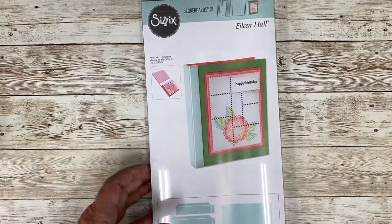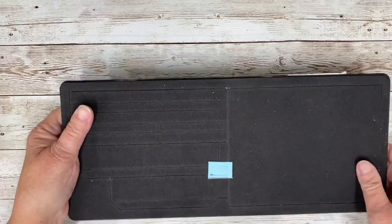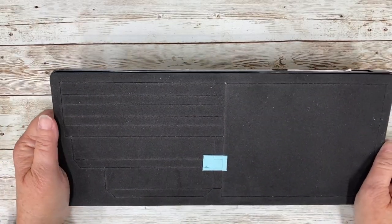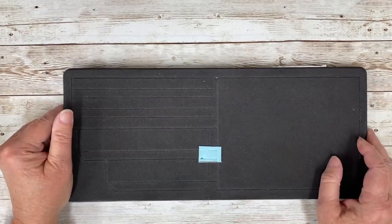So this is the die that you're going to want. This is the die and here's what it looks like. And let's go over the parts to it.